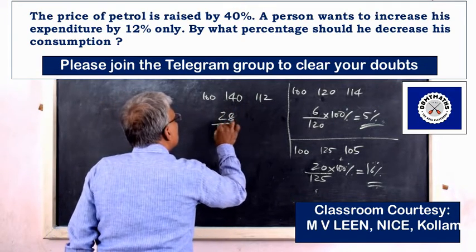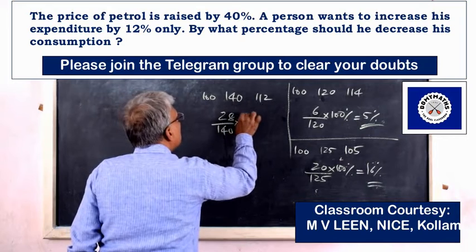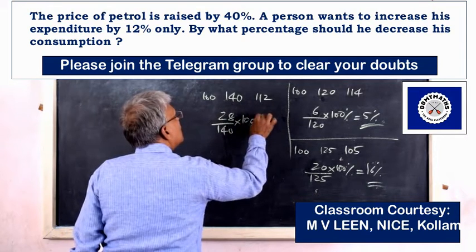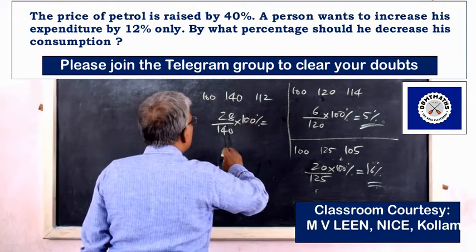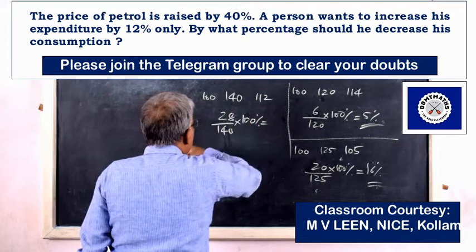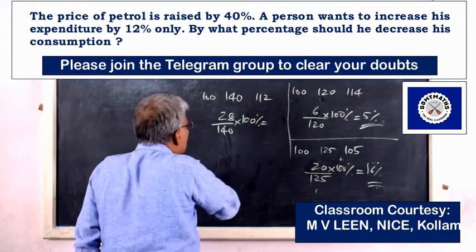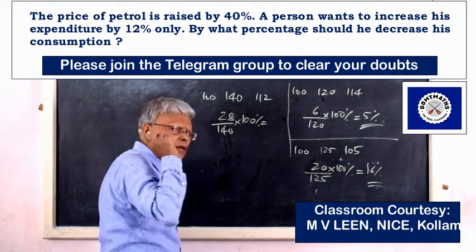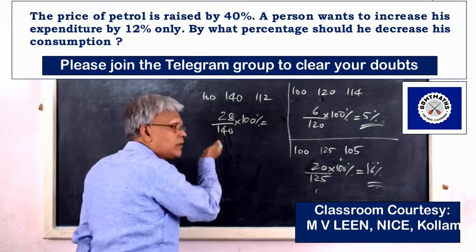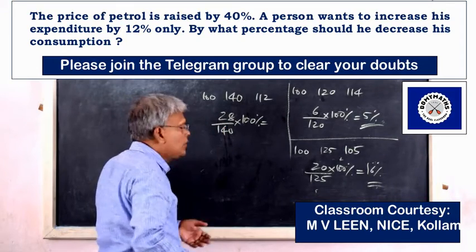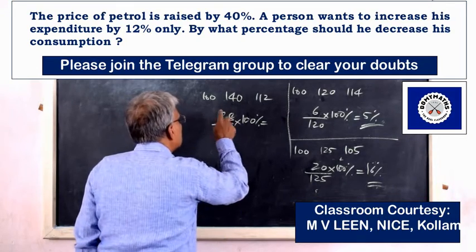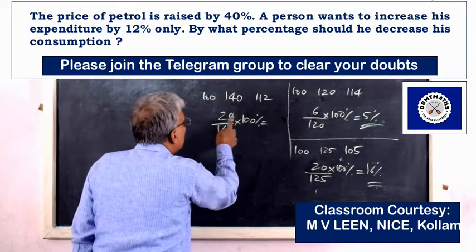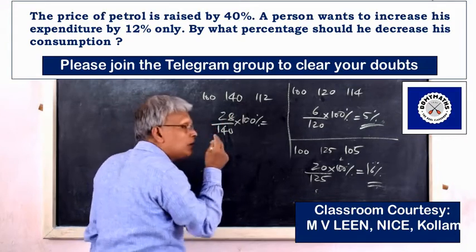28 divided by 14 — the percentage equals 100. Simplify: 28 and 140 divide by 5, giving 28 over 140. Simplify further to 1 over 5, which equals 5 to 14. The result is equal to 50 over 100, giving 20%.